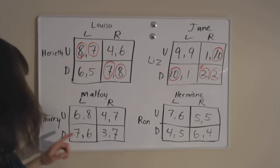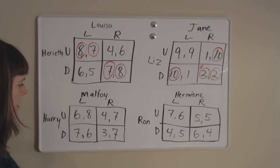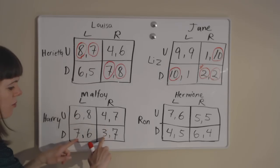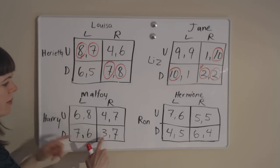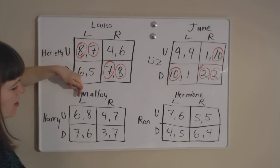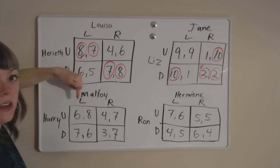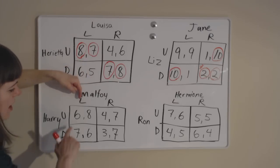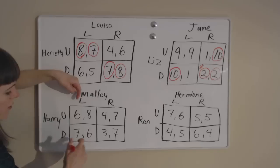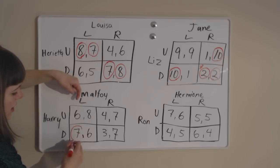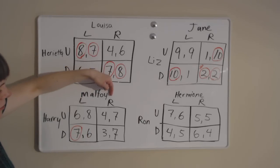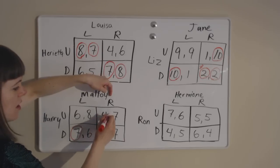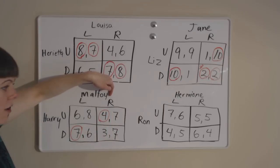Now let's try Harry and Malfoy. We'll start from Harry's perspective — player 1's payoffs — and check Harry's best responses to Malfoy's strategies. If Malfoy goes left, Harry would have wished he went down to get the 7. If Malfoy chooses right, Harry would have wished he chosen the 4.